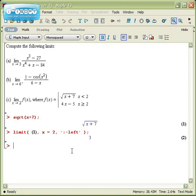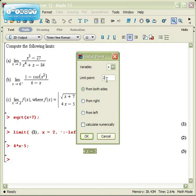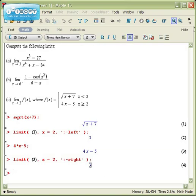On the other hand, 4 times x minus 5 is the portion of f of x that lies to the right of 2. So I can take the limit of this part as x approaches 2 from the right. And it turns out that this value is also 3.